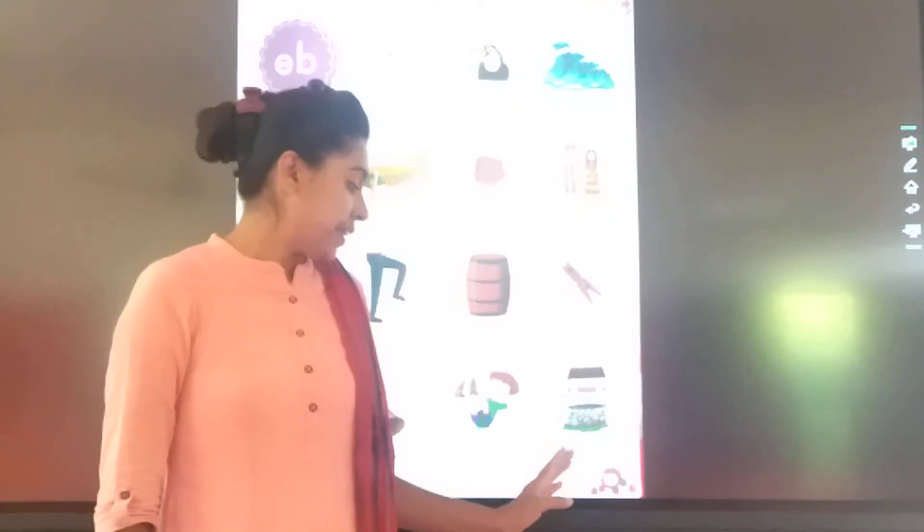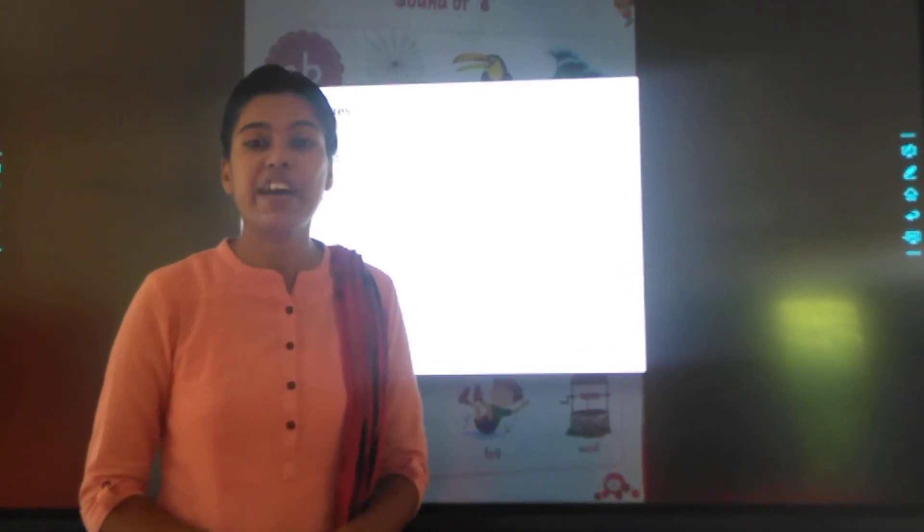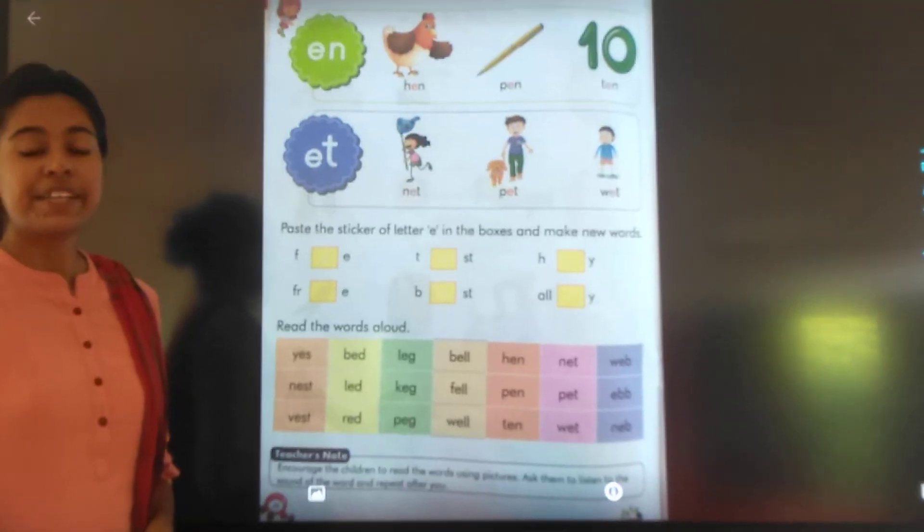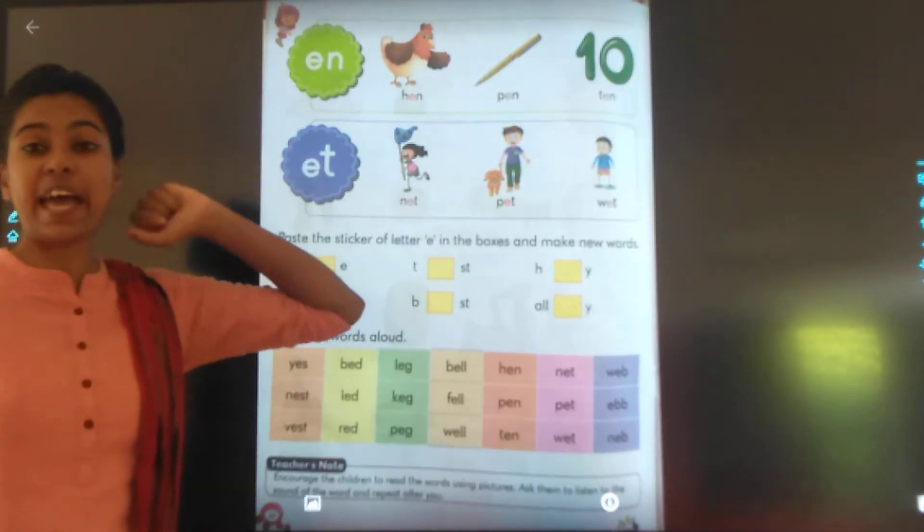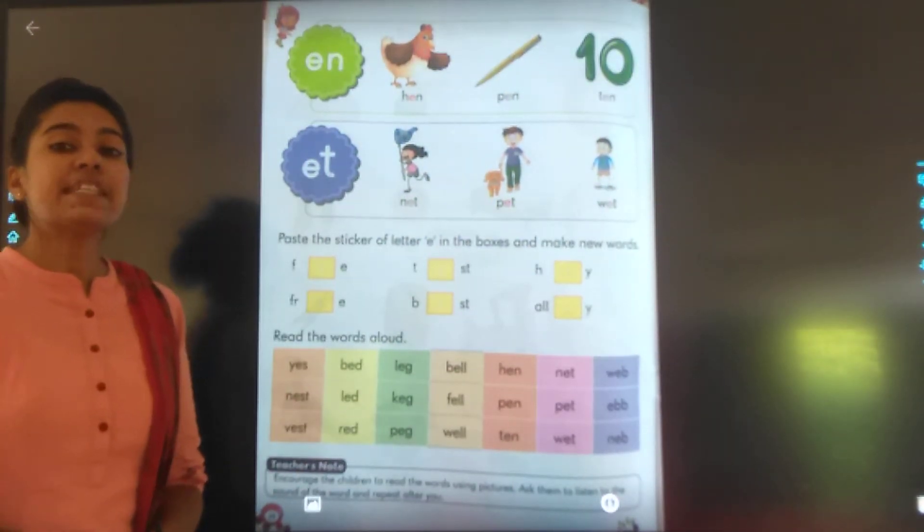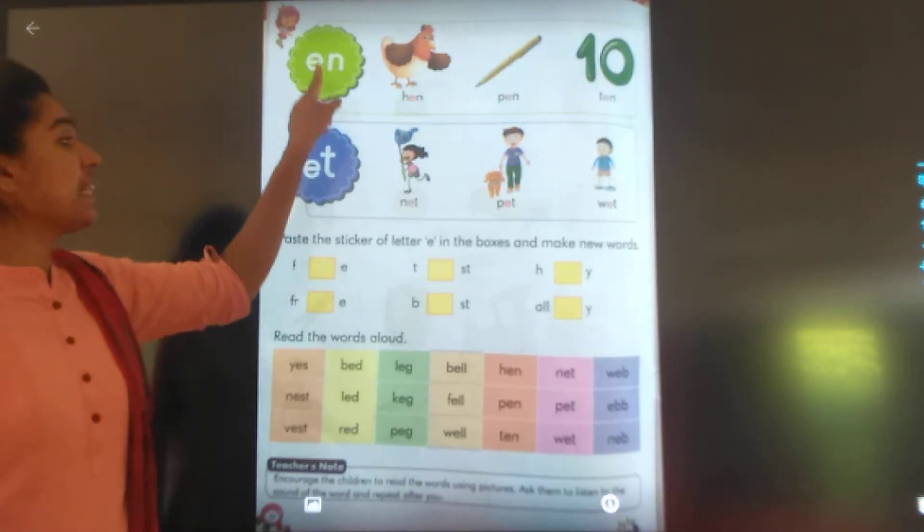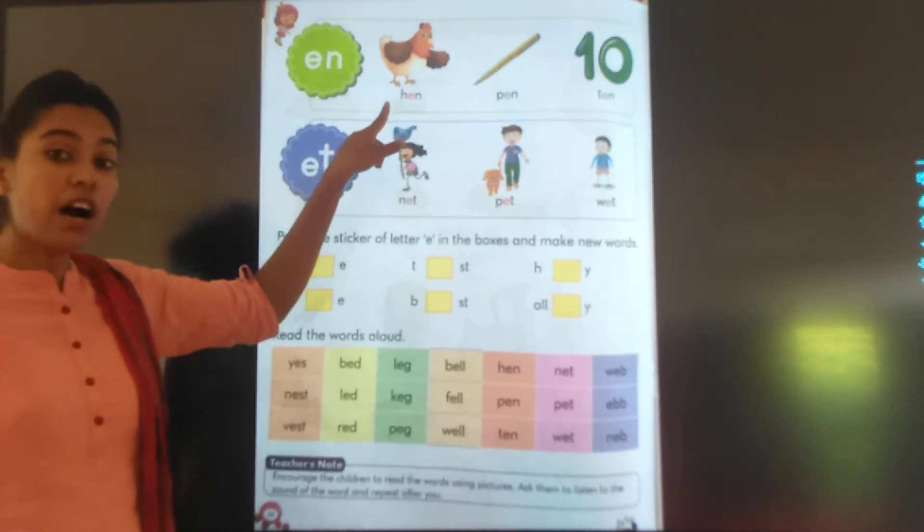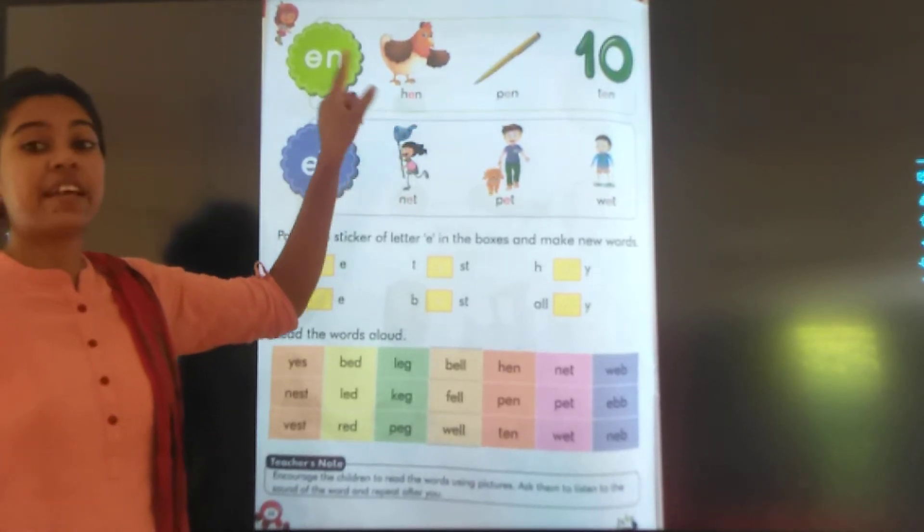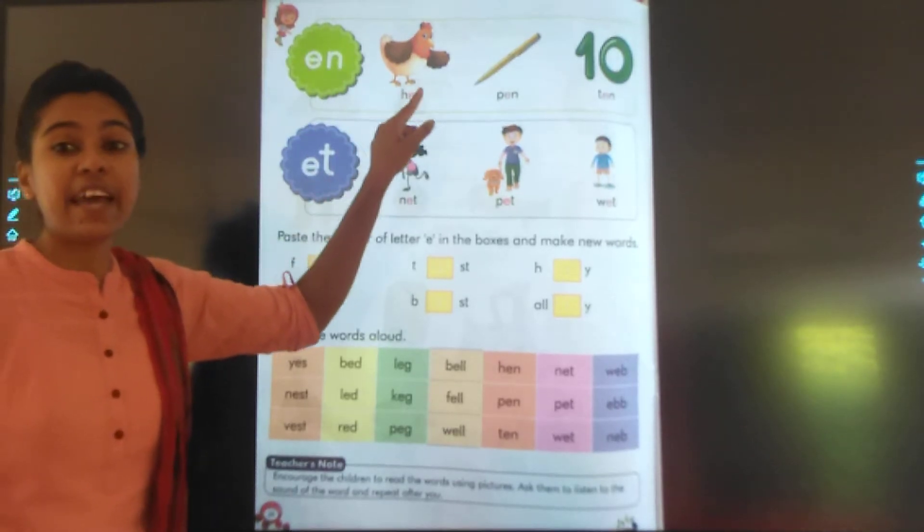W-E-L-L, well. The next two little words is E-N-N. Repeat with me, E-N-N. E-N-N. H-E-N, hen. H-E-N, hen. P-P-P-E-N, pen. P-P-E-N, pen. T-T-E-N, ten. Ten.